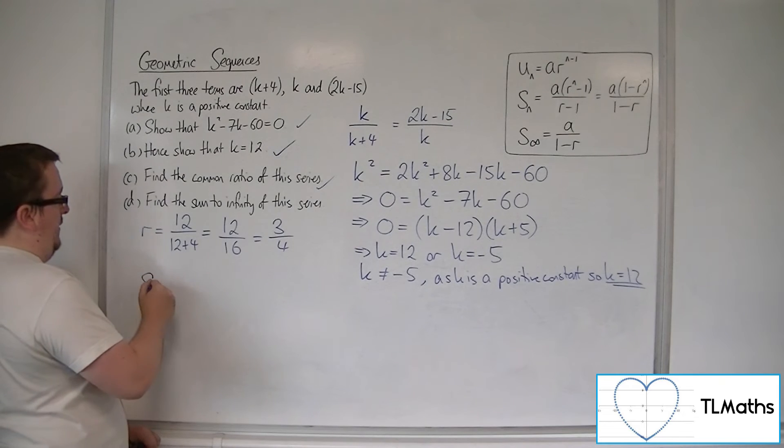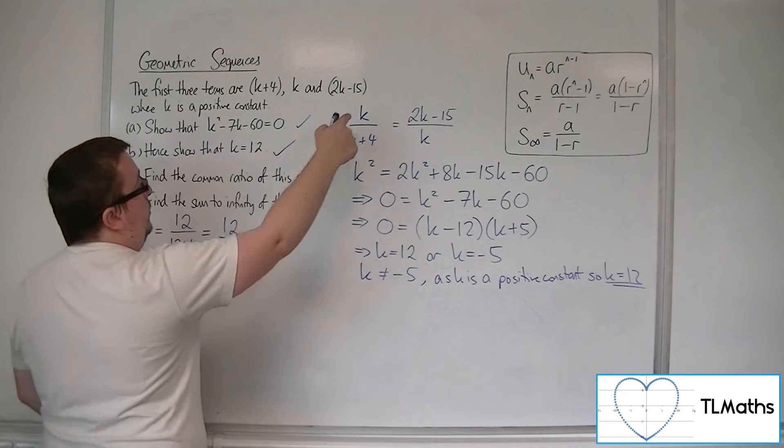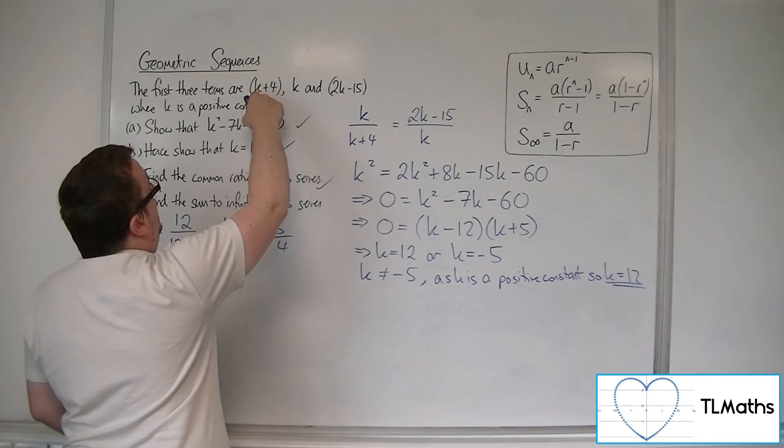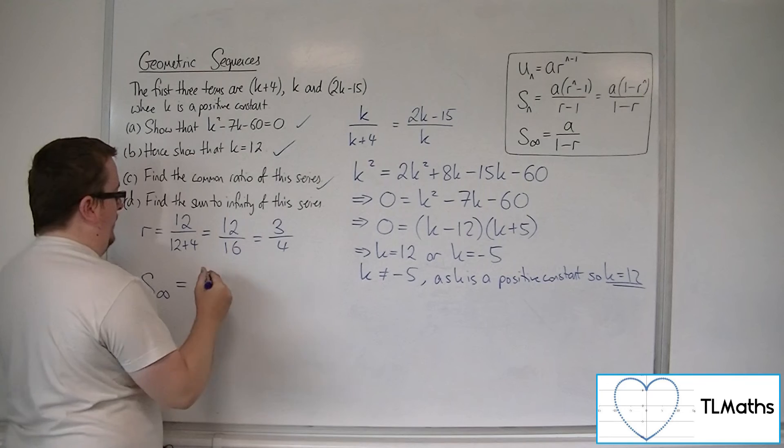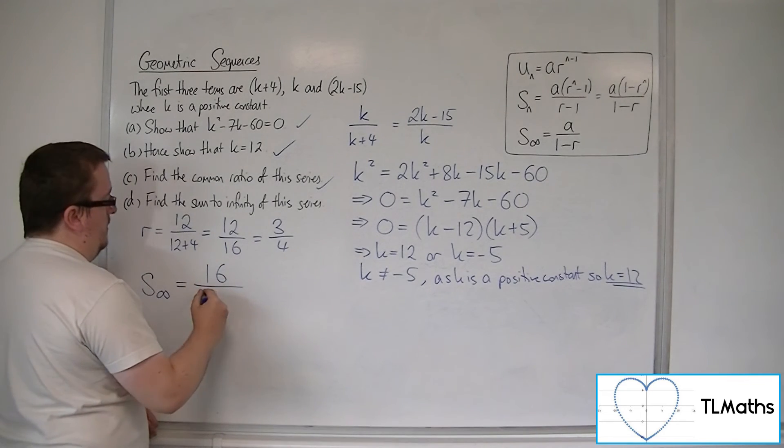So the sum to infinity uses the first term, a, which is, we know that k is 12. So the first term is 12 plus 4.